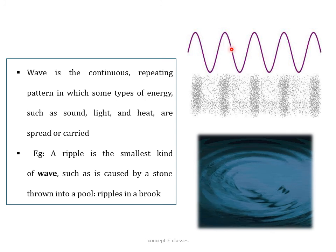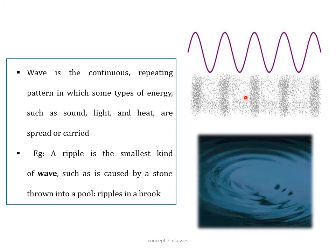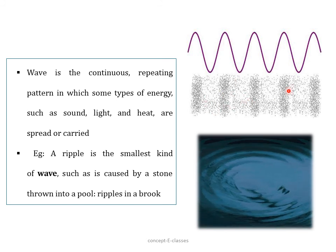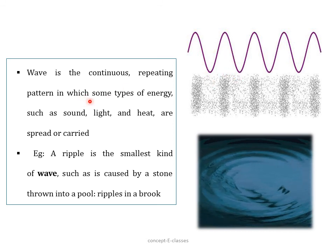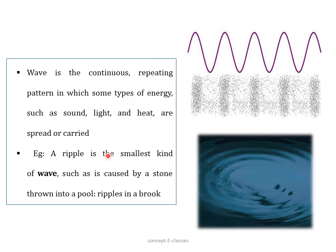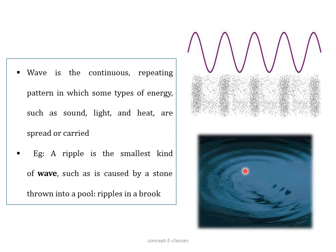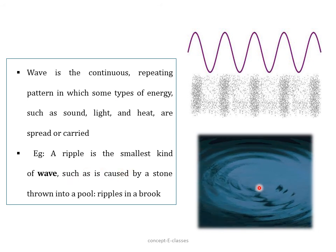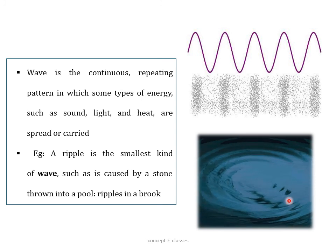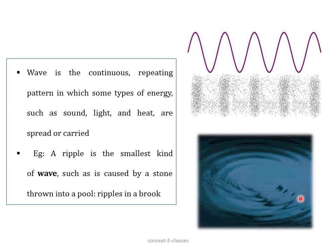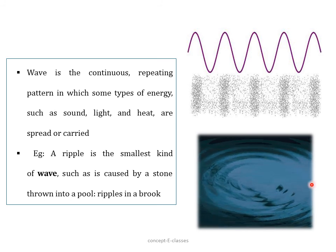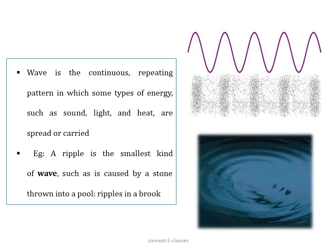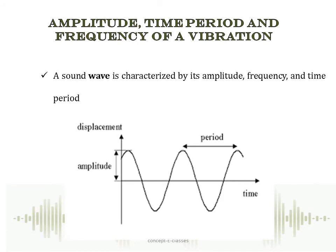A wave is a periodic disturbance of particles in a medium which carries some type of energy such as sound, light, or heat. An example of a wave is the ripples inside water — if we throw a stone into water, we find ripples, meaning there are disturbances in the water particles at regular intervals of time. So when an object vibrates, a sound wave is produced.